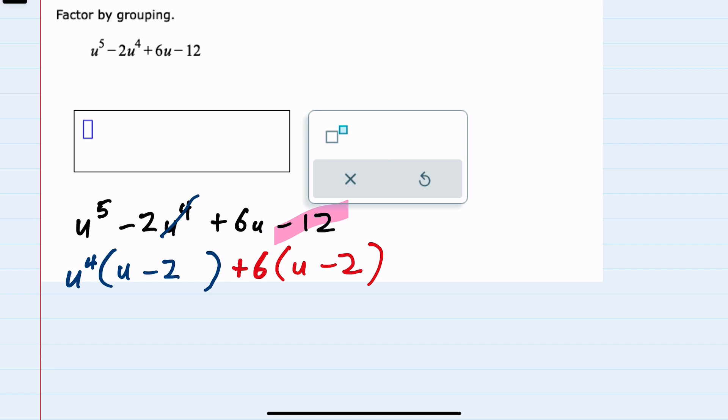Now that I've factored out the greatest common factor from each one of those two groups—the first two and the last two—I see that this new expression has something in common as well. They both have this u minus 2, meaning that I can factor out u minus 2.